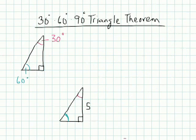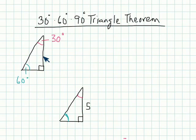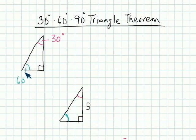Let's look at the next theorem. The next one is about 30-60-90 triangles. The 30-60-90 triangle, like the 45-45-90, is going to have relationships between the short leg, the long leg, and the hypotenuse. Since 30 degrees is the smallest angle within this triangle, its opposite side is going to be the shortest leg. 60 is in the middle, so it's going to be the longer leg. And the hypotenuse across the 90-degree angle is going to be the longest side.